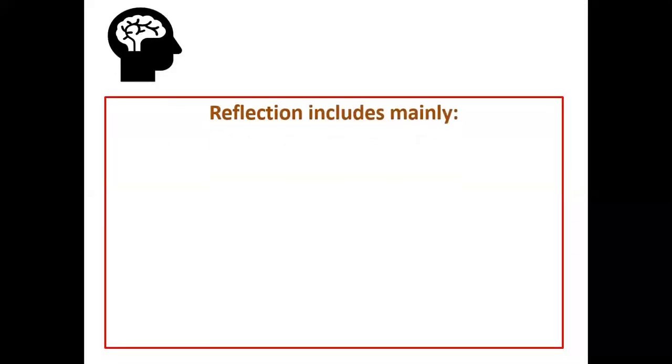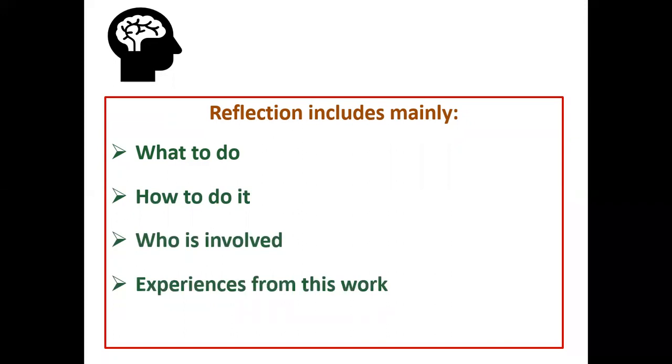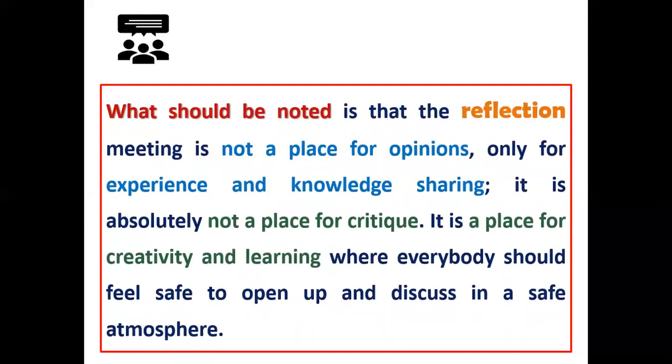So, the process of reflection should include mainly what to do, how to do it, who is involved, experiences from this work, and how to improve. It should be noted that in reflection, not a place for opinions, but only for experience and knowledge sharing. Also, it is not a place for critique. It is a place for creativity and learning, where everybody in the process of reflection should feel safe to open and discuss in a safe atmosphere.